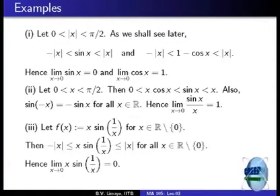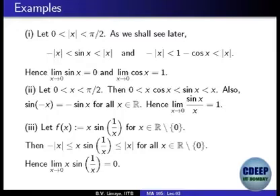Now using the inequality x·cos(x) ≤ sin(x) ≤ x for x in (0, π/2), divide throughout by x (which is not 0). The left side is cos(x), which we showed tends to 1. The right side is 1. Something caught between two things both tending to 1 must also tend to 1. Therefore, the limit of sin(x)/x as x tends to 0 is equal to 1.